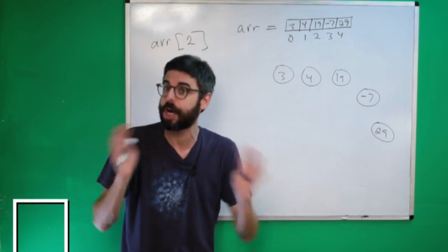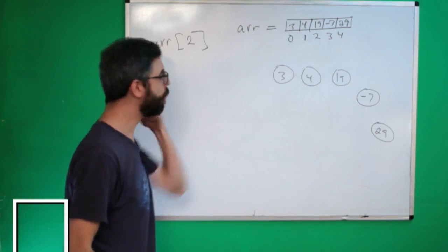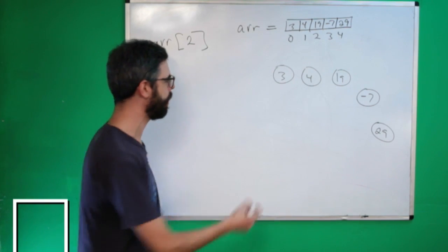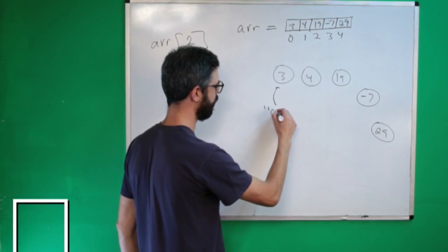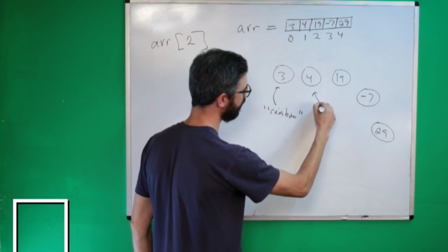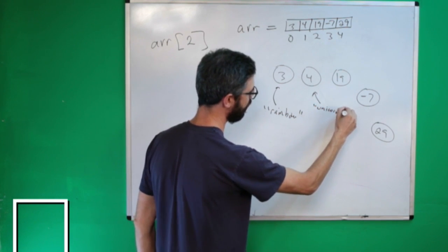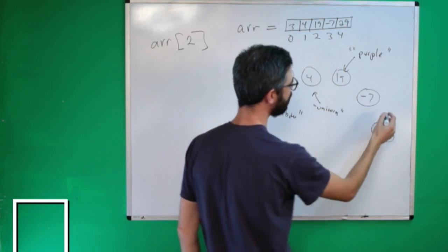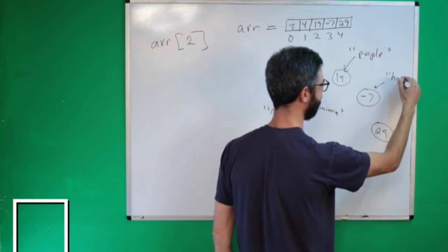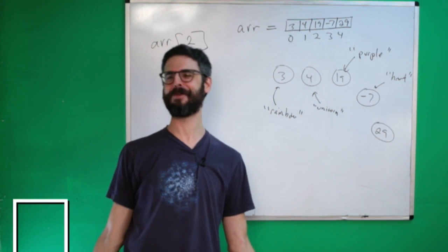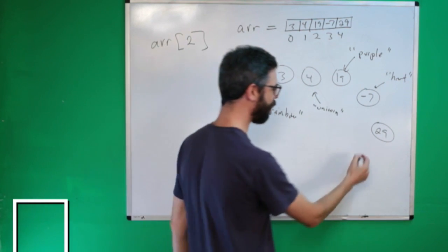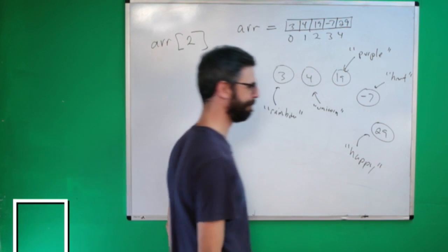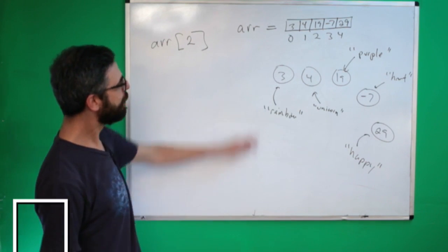In all the examples I'm going to show you is a string. Of course, the key can be something other than a string, a string of a text. But, so the idea is here, what if instead of referring to each of these by their index, I could name them? So this one is rainbow. And this one is unicorn. And this one is purple. And this one is heart. Oh, I ran out of my happy words. And this one is happy.